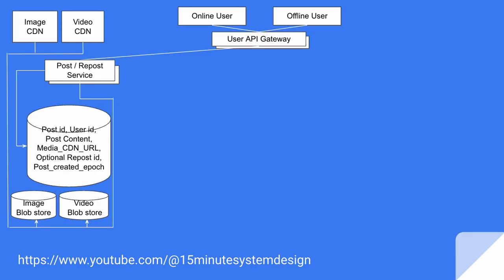Now let's talk about the design. Users are connected to a user-side API gateway. There's a service responsible for creating a post or reposting a particular existing post. This service has a database which contains the mapping of post ID, user ID, post content, and the media content CDN URL. If this is a repost, we should also have the parent ID mapped to it — an optional repost ID — and the time this post was created: the post created epoch.